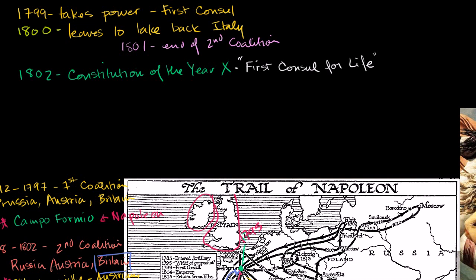Remember what's happening at the same time: there was a Revolution in Haiti, which was the most profitable slave colony in the world. Once the slaves revolted and got their freedom, it was not as profitable to France. Napoleon tries to reinstate slavery, which essentially backfires on him. Dessalines catches wind of it, and him and the other revolutionaries start antagonizing Leclerc even more.